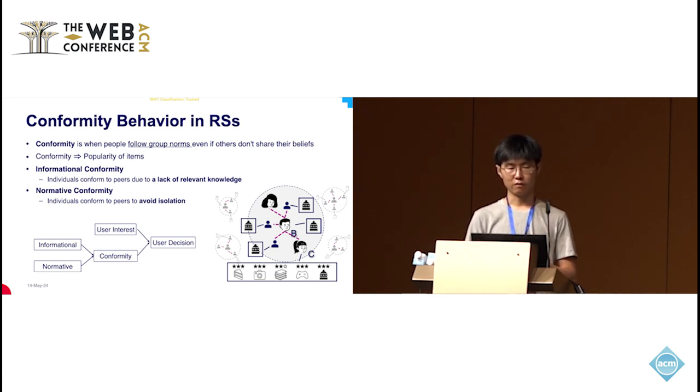Like this example showing, user B and user C represent informational conformity and normative conformity. Informational conformity is when an individual conforms to peers due to lack of relevant knowledge. For example, when we plan to buy a car or house, we need to investigate and collect information from other users with similar interests, budgets, or plans. On the other hand, normative conformity is when an individual conforms to peers to avoid isolation or to not miss out. They try to imitate others and make a safe choice.